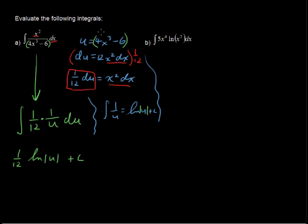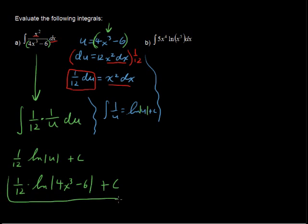And now we're going to plug in this part all over again for u. So I have 1/12 times the natural log of the absolute value of 4x to the third minus 6 plus c. So that's the answer to the first one.